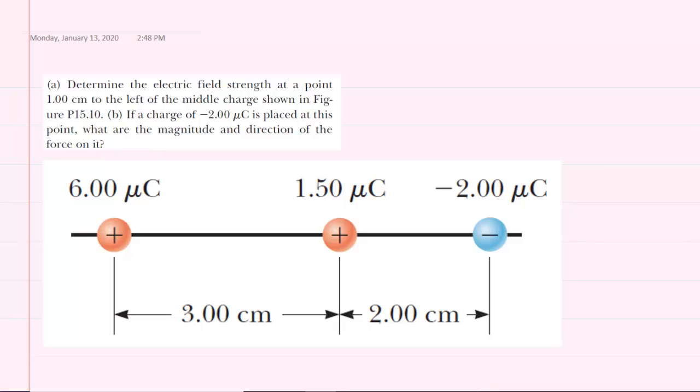In order to determine the electric field strength at a point one centimeter to the left of the middle charge, it will be useful to mark a point that is based on that description. So one centimeter to the left of the positive charge would be located approximately right here.